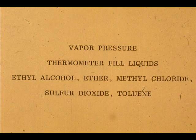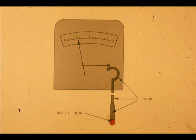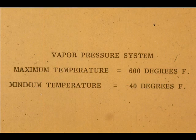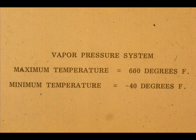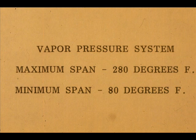The most common liquids used for thermometer fills are ethyl alcohol, ether, methyl chloride, sulfur dioxide, and toluene. The amount of liquid used depends on the range desired and the temperatures to which the bulb will be exposed. The maximum operating temperature is 600 degrees Fahrenheit. The minimum temperature is minus 40 degrees Fahrenheit. The span can be a maximum of 280 degrees Fahrenheit and a minimum of 80 degrees Fahrenheit.